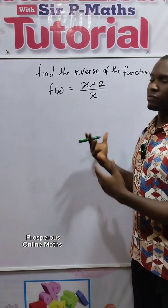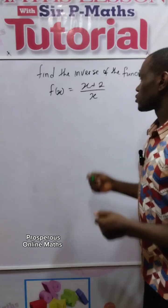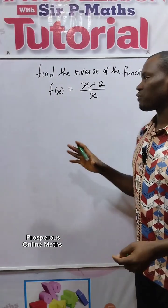We are required to find the inverse of this function f of x equals x plus 2 over x. So what we need to do is to make x the subject of the formula. But meanwhile, before we do that...